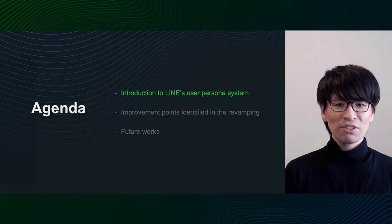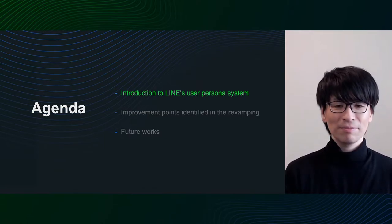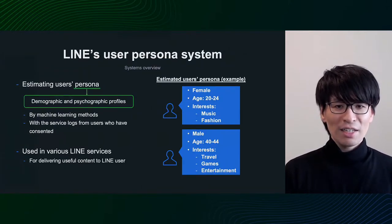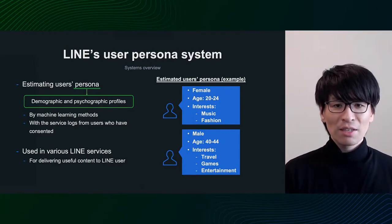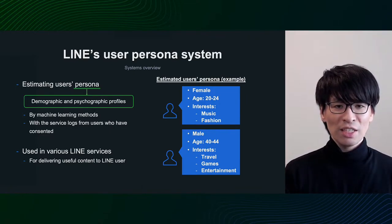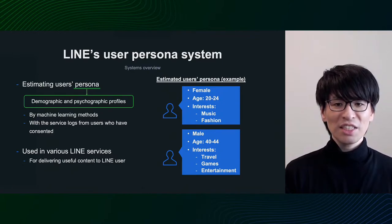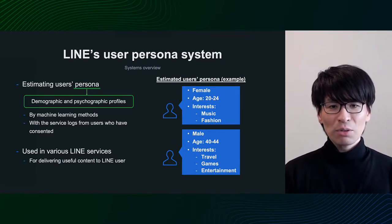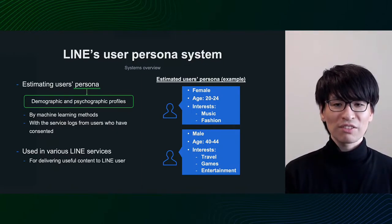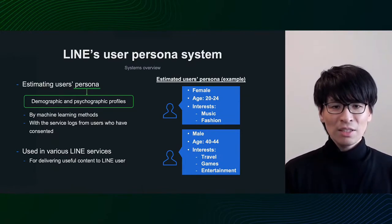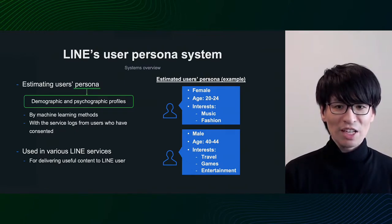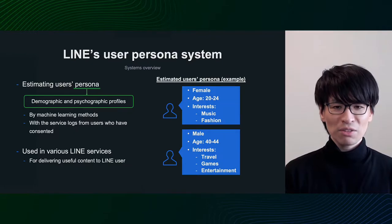First of all, I'd like to introduce the user persona system at LINE. We are developing and operating a system to estimate the persona of LINE users. The user attributes or persona to be estimated include not only demographic attributes such as gender and age group, but also psychological attributes such as interests and concerns. The attributes are estimated using machine learning methods and the service logs of permitted users are utilized. The estimated persona is used in various LINE services to deliver more useful content to LINE users.